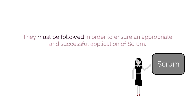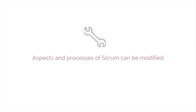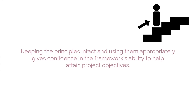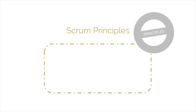Within the scope of these principles, the aspects and processes of Scrum can still be modified to meet the requirements of a specific project or of the organization using them. The Scrum principles themselves, however, are non-negotiable and must be applied as described in a guide to the Scrum body of knowledge, or the SBOK guide. Keeping the principles intact and using them appropriately gives those using Scrum confidence in the framework's ability to help them attain their project's objectives. The principles are considered the core guidelines for applying the Scrum framework.